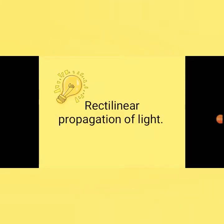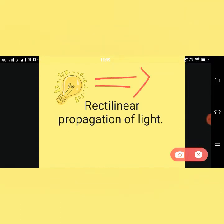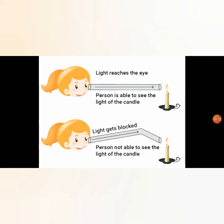Good morning. Today we are going to learn about rectilinear propagation of light. Rectilinear propagation of light shows that light travels in a straight line. Let's see this with an activity.